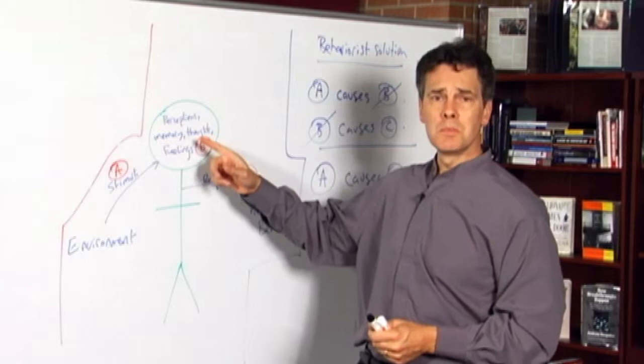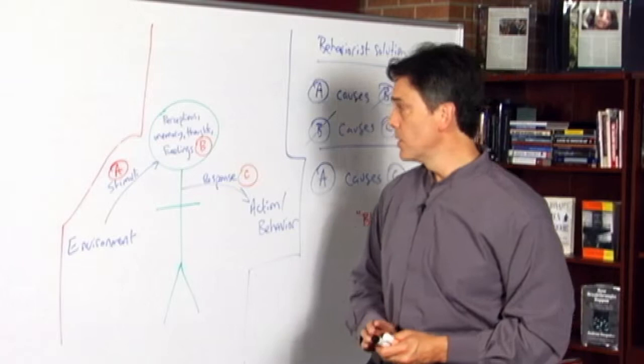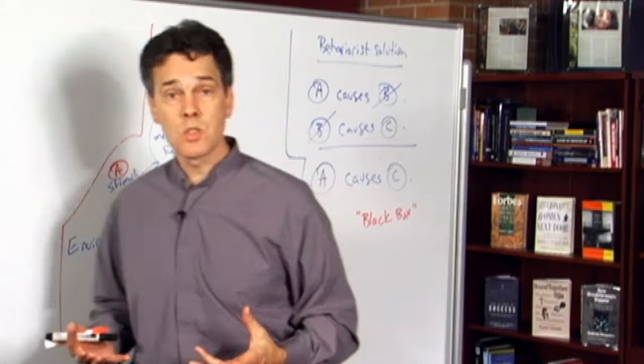And so this thesis then of environmental determinism is very important to the behaviorists. If there is any such thing as freedom, volition, self-regulation, any degree of autonomy from a stimuli, then this model is not going to work and so the environmental determinism is an important part of the behaviorist apparatus here.